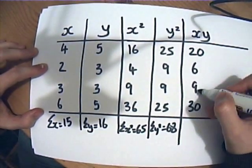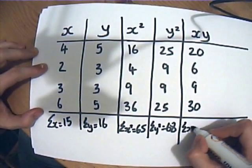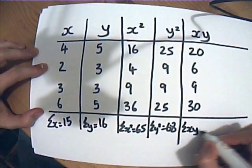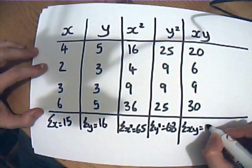Right, where are we? X times y, let's add them up: 26, 35, 65. So the sum of x times y is 65.